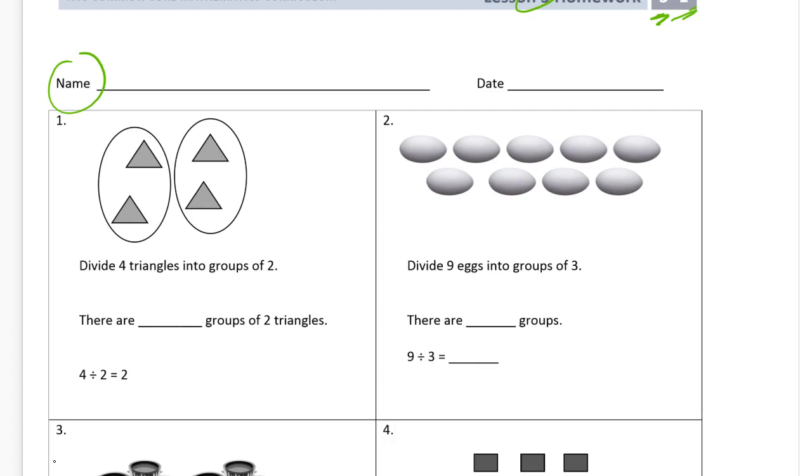You'll see how the pictures work out. Number one: divide four triangles into groups of two. They've already got the picture. They already divided them into groups of two, so we know there's two in every group. We just have to keep circling groups of two and then count how many there are. There are two groups of two triangles.